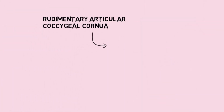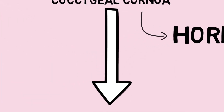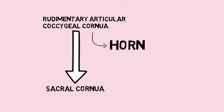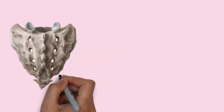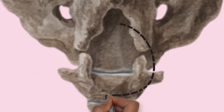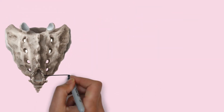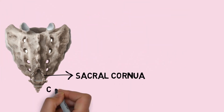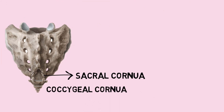This vertebra has a rudimentary articular coccygeal cornu — cornu means horn — and this cornu articulates with the sacral cornu. This is the dorsal view of sacrum attached with the coccyx. This is how the cornu articulates. The upper ones are the sacral cornu and the lower ones are the coccygeal cornu.